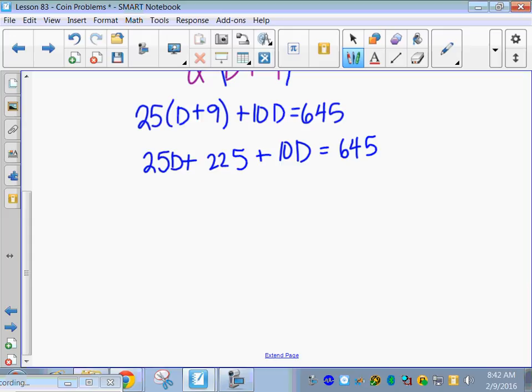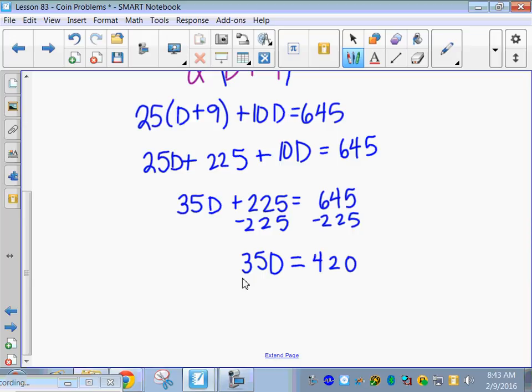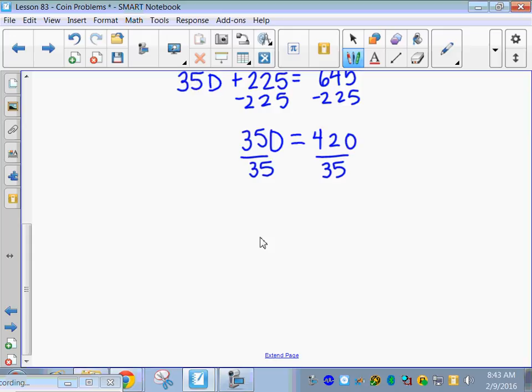Combine like terms. So, I have 25D plus 10D is 35D. 25D. Subtract 225 from both sides. And divide by 35. Did that go in nicely, you guys? Those of you that are 7. So, 70 right here would be 2. Okay. So, 12. Okay.